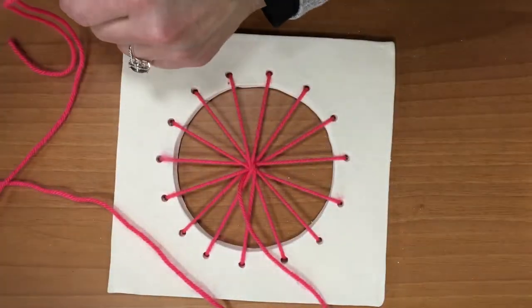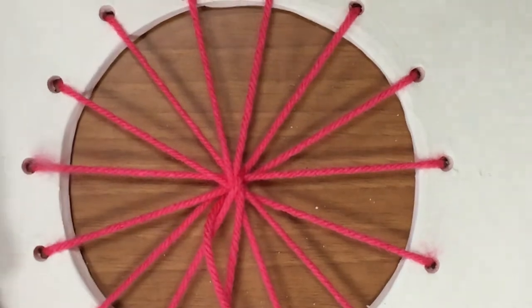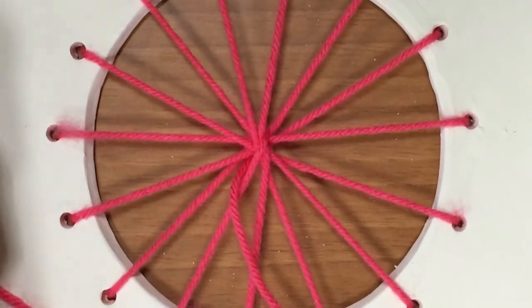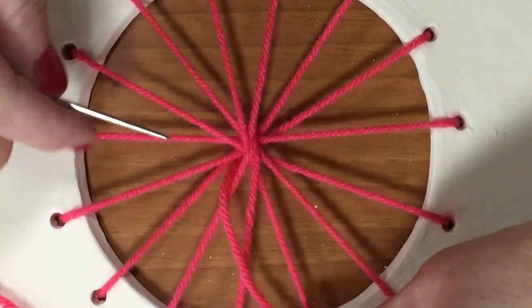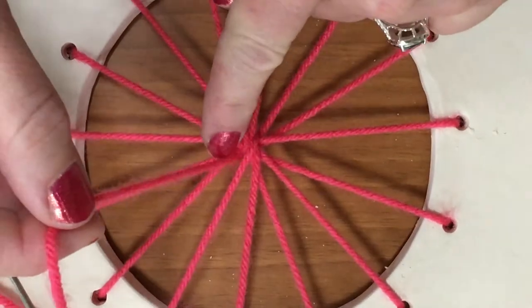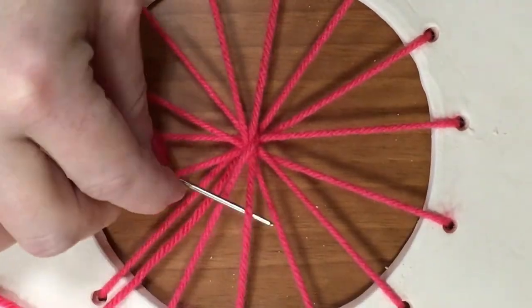now I can start going over and under. So when we weave, we go over. Let's see if I can zoom in here a little bit better. So I'm coming up right here. So I'm going to go over, under, over, under, over, under.